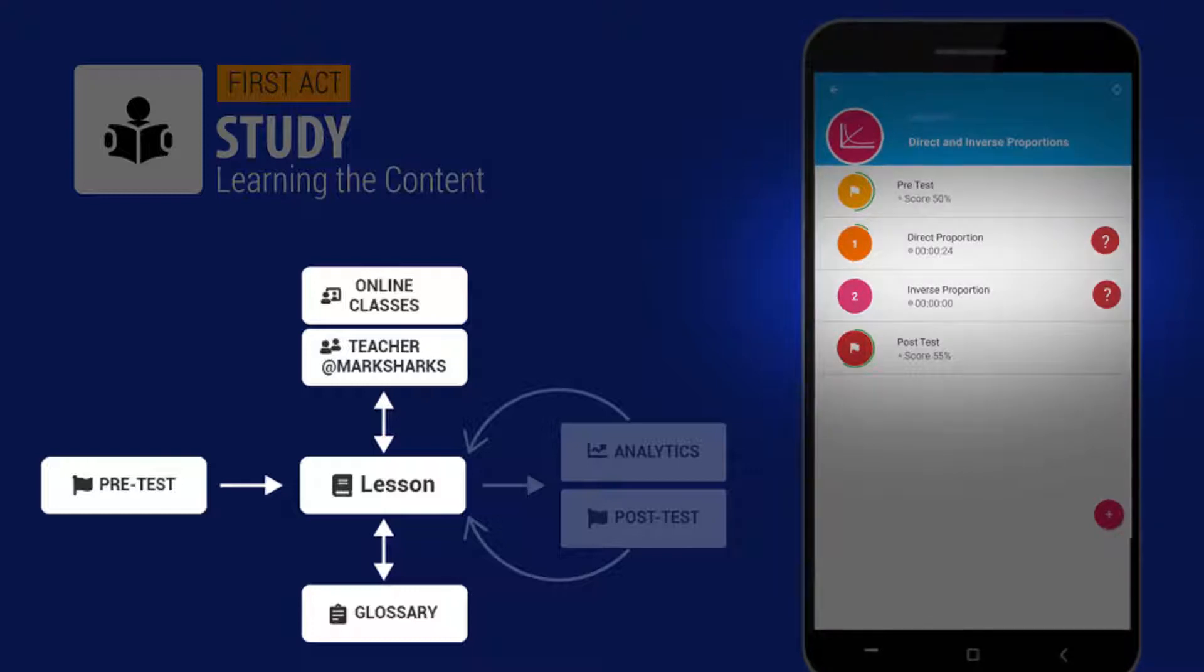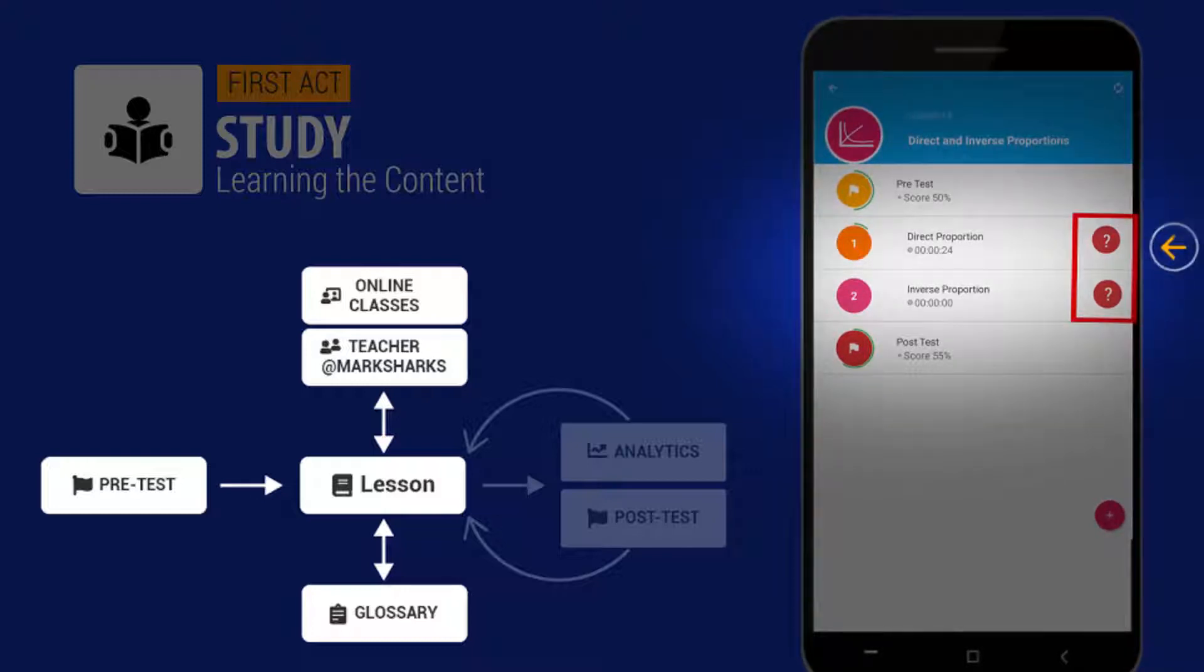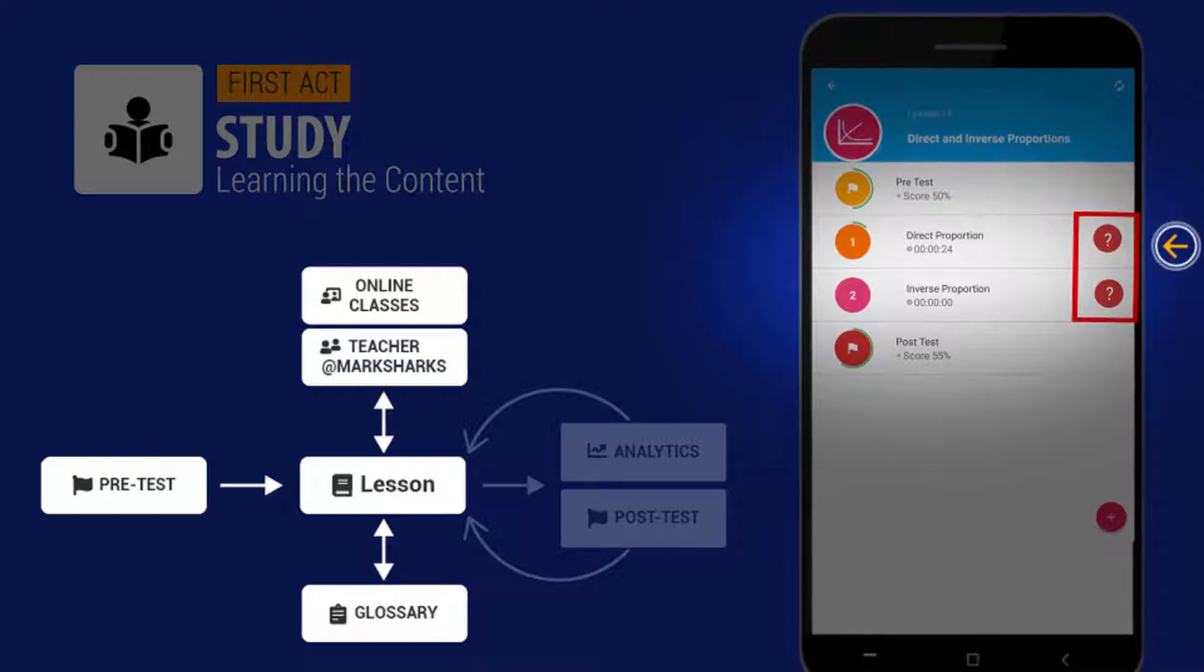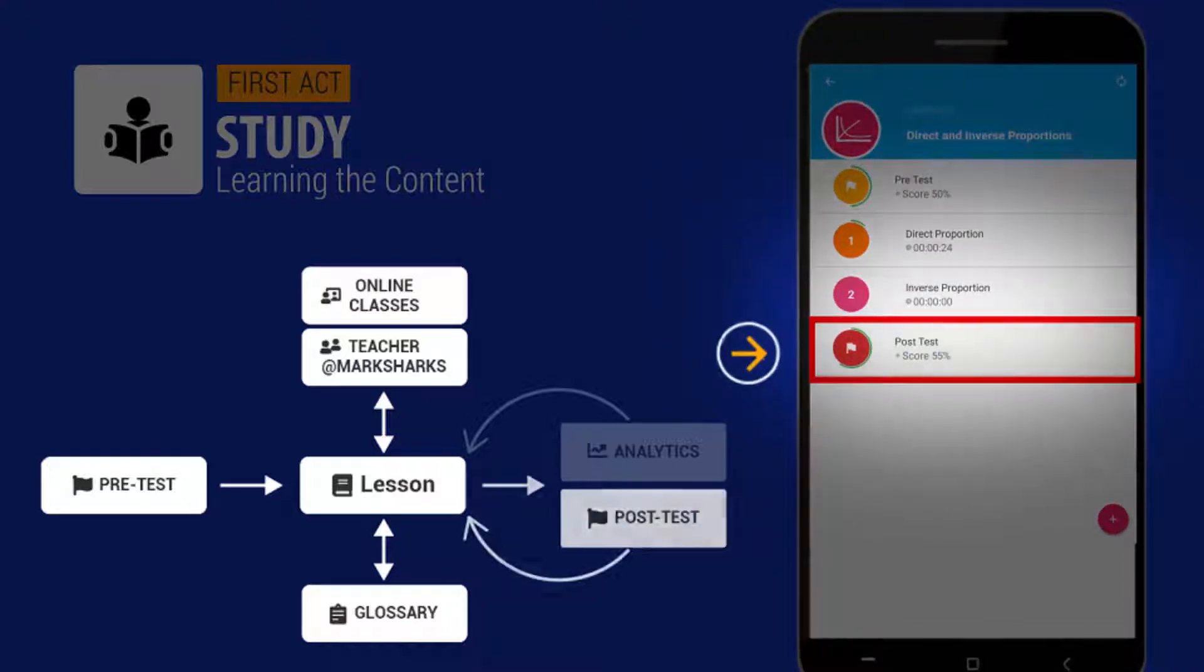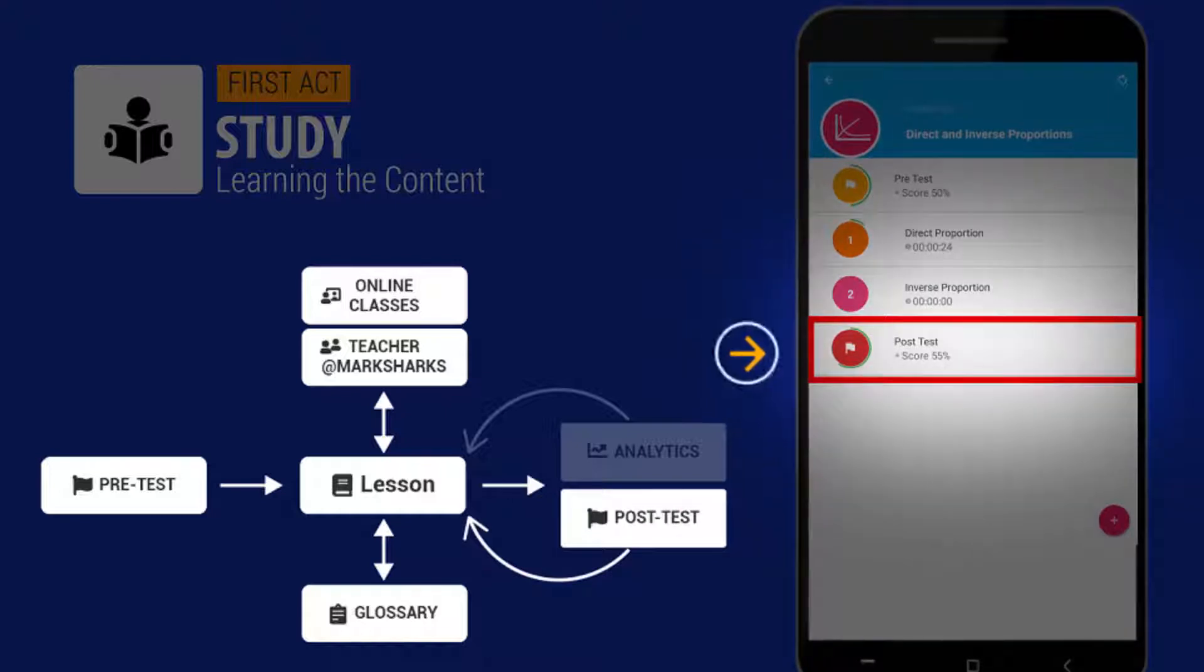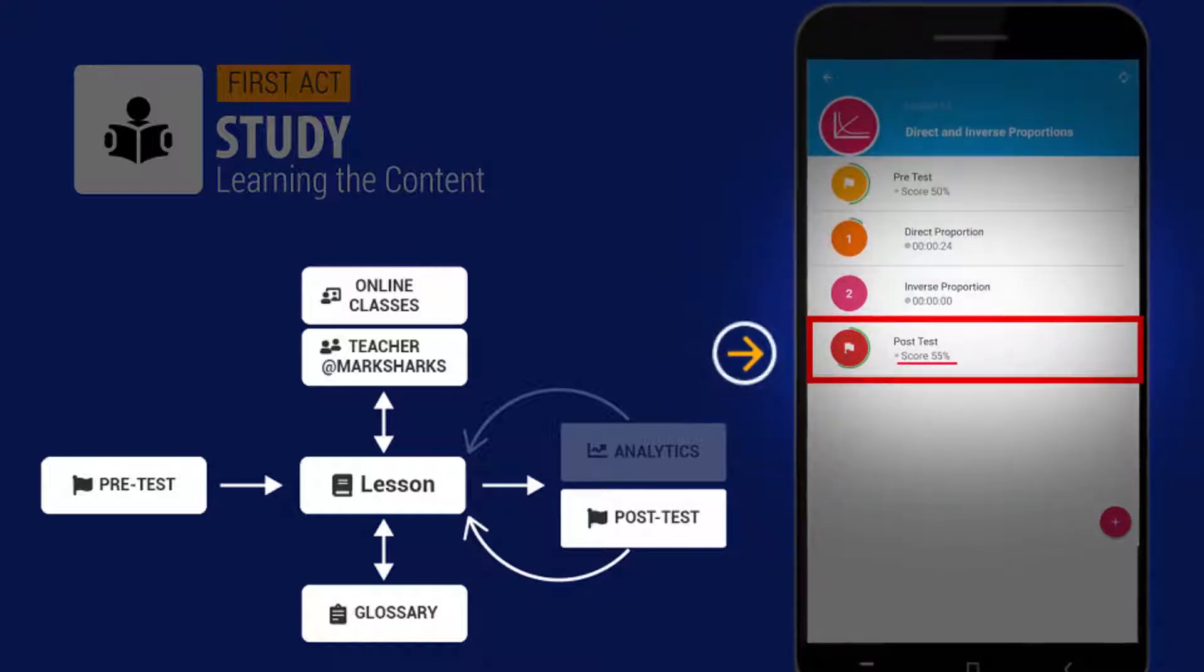If you have any problems working on a particular screen, tap the help button to receive instructions on how to do the activity and what to expect. When you have worked through all screens of the topics, go to the post-test and you see how you improved your knowledge of the lesson.